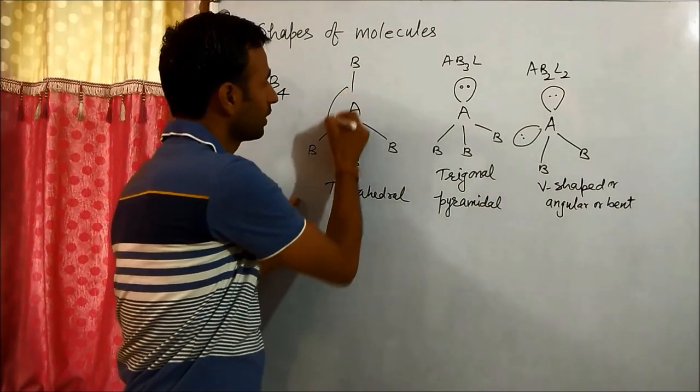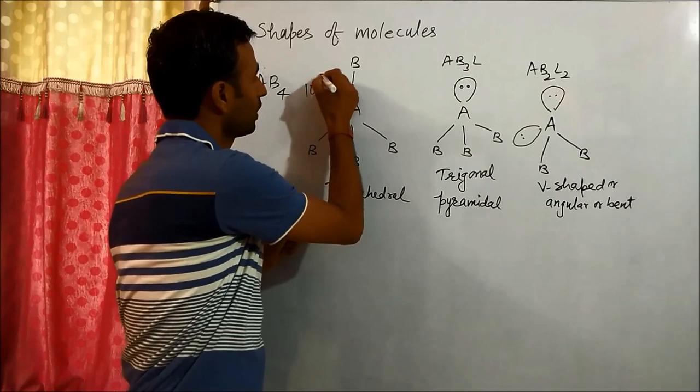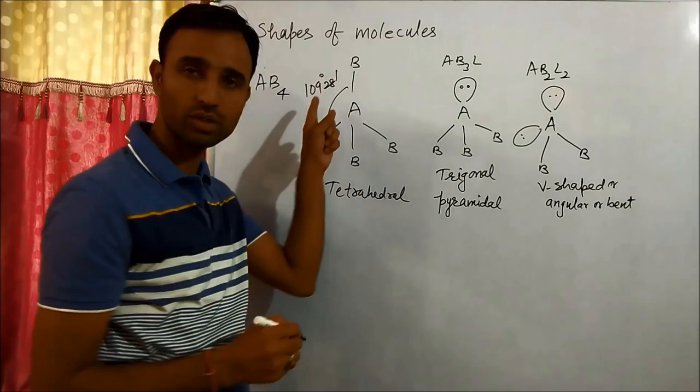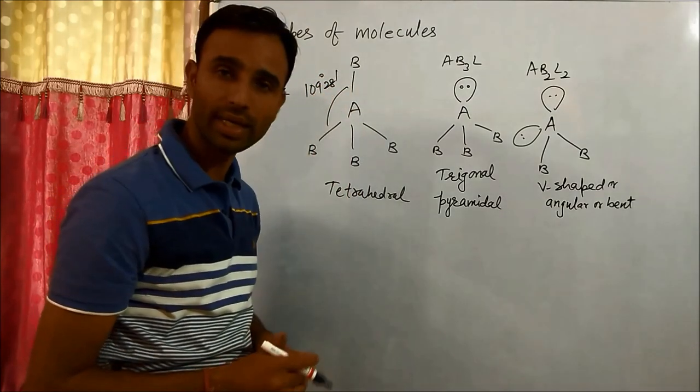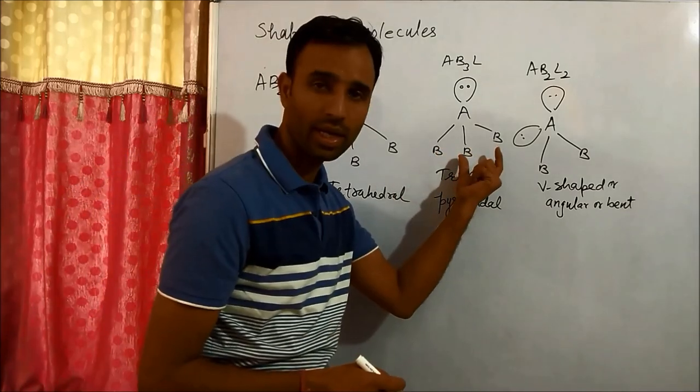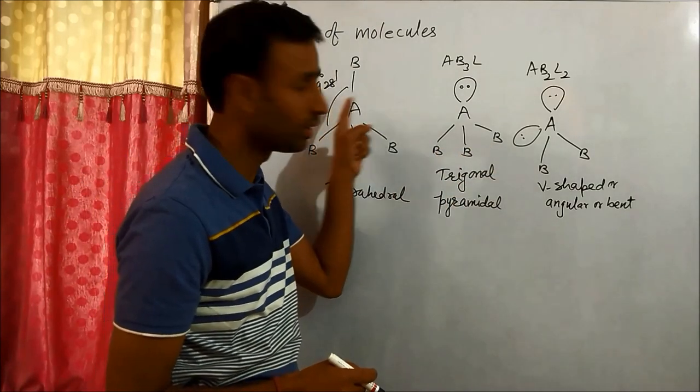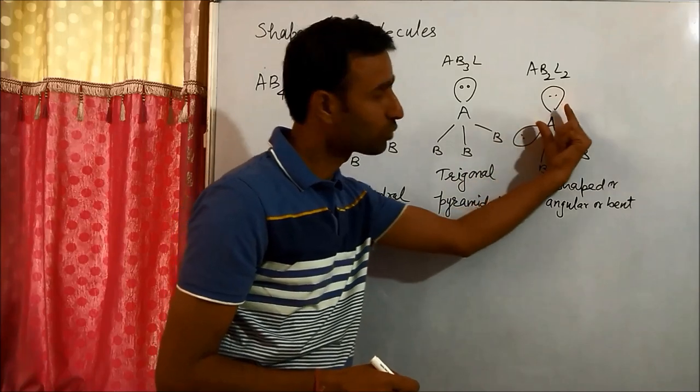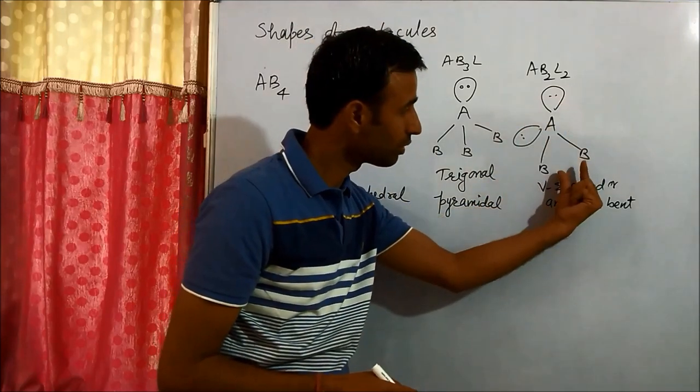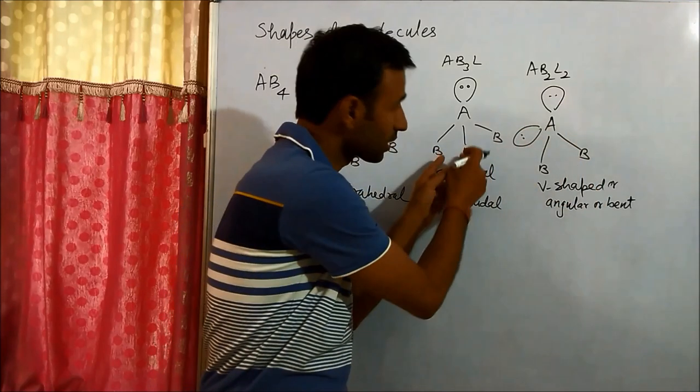Now regarding angles - in case of regular tetrahedral, the angle is 109 degrees 28 minutes. Here, the angle is less than this, and when we have two lone pairs, the bond angle is even lesser.